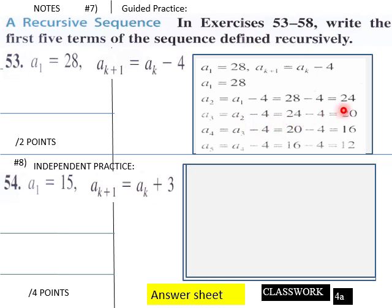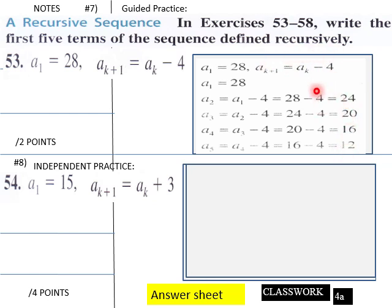Then a₃ = a₂ − 4 = 24 − 4 = 20. And a₄ = a₃ − 4 = 20 − 4 = 16. And a₅ = a₄ − 4 = 16 − 4 = 12. That's why it's recursive: you always go back to your previous output to determine the present output.